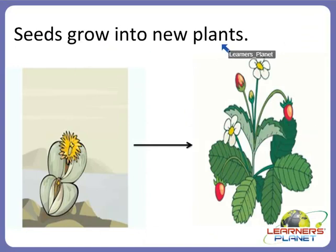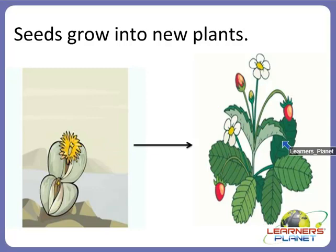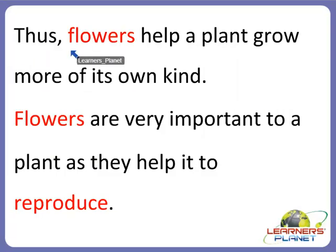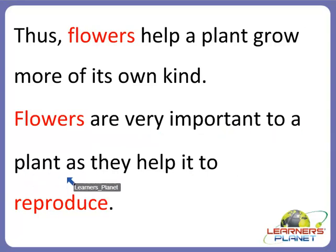Seeds grow into new plants. You can see in this picture there is a seed and a baby plant coming out of it, and after some time it grows into a very big new plant. Flowers help a plant grow more of its own kind — for example, apple flowers give apple fruits. Flowers are very important to a plant as they help it to reproduce.